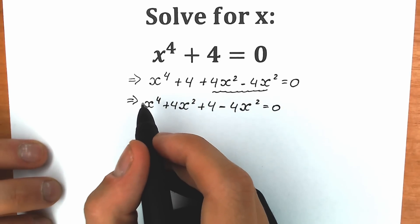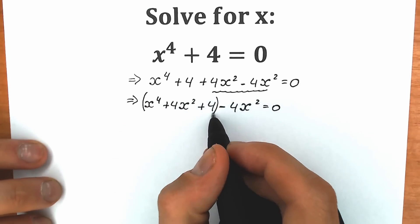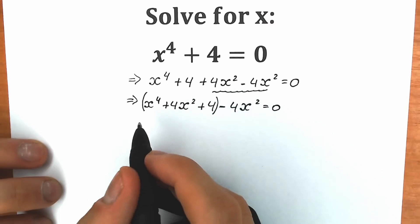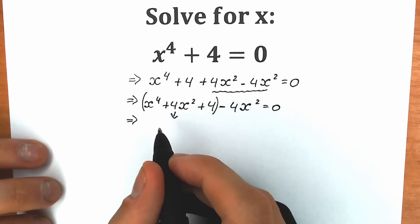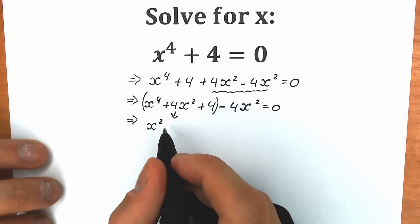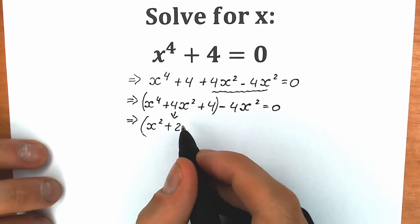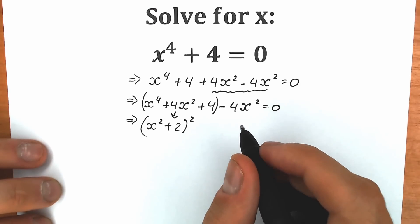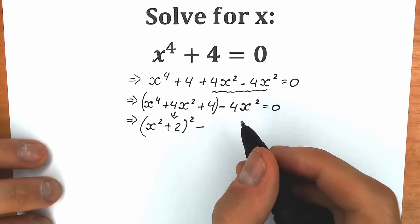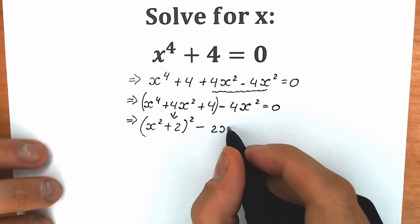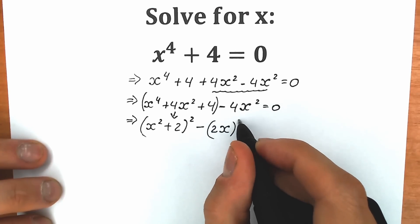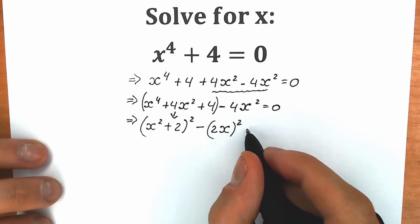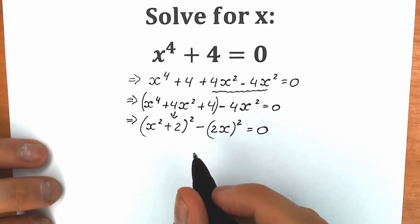Let's group this expression. If you look closely, this is a basic school formula — we have x² plus 2, squared. So this expression equals (x² + 2)². If you don't trust me, you can expand it using the basic school identity. And instead of minus 4x², let's write (2x)², because (2x)² equals 4x². So this is absolutely the same thing.